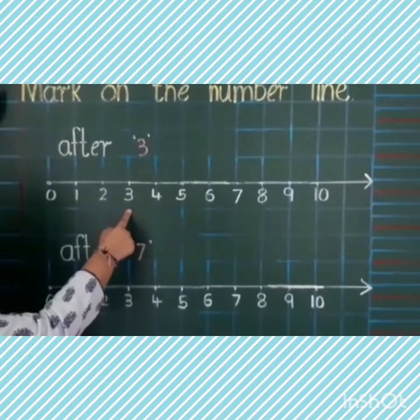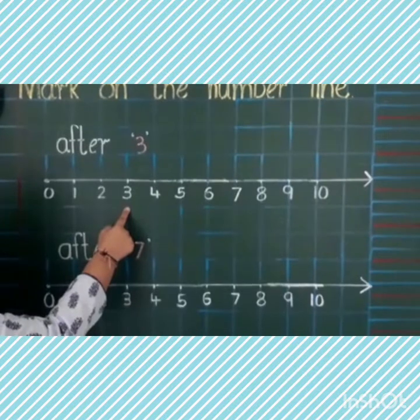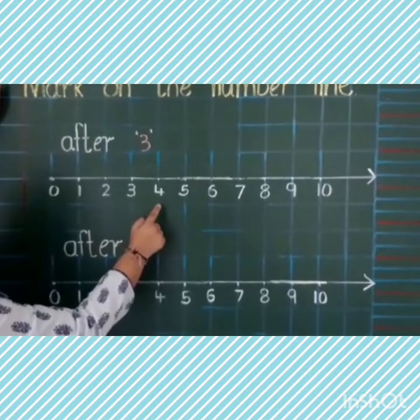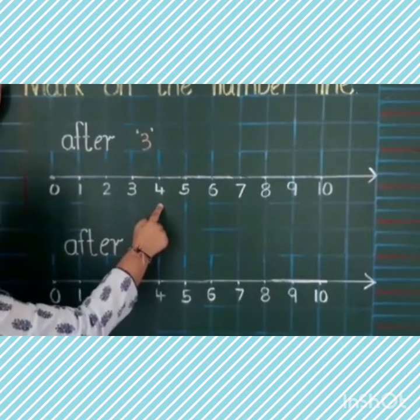Three ke baad kya aata hai? Yes. After three comes four. So, we will encircle four. Because four comes after three.